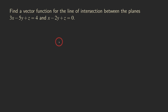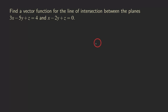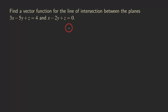Hello everyone, it's Wilson here. I just realized that I have not talked about finding the parameterization for the line of intersection between the two planes. So here we are — we have a problem here with two planes, and we want to find the line of intersection between those two.